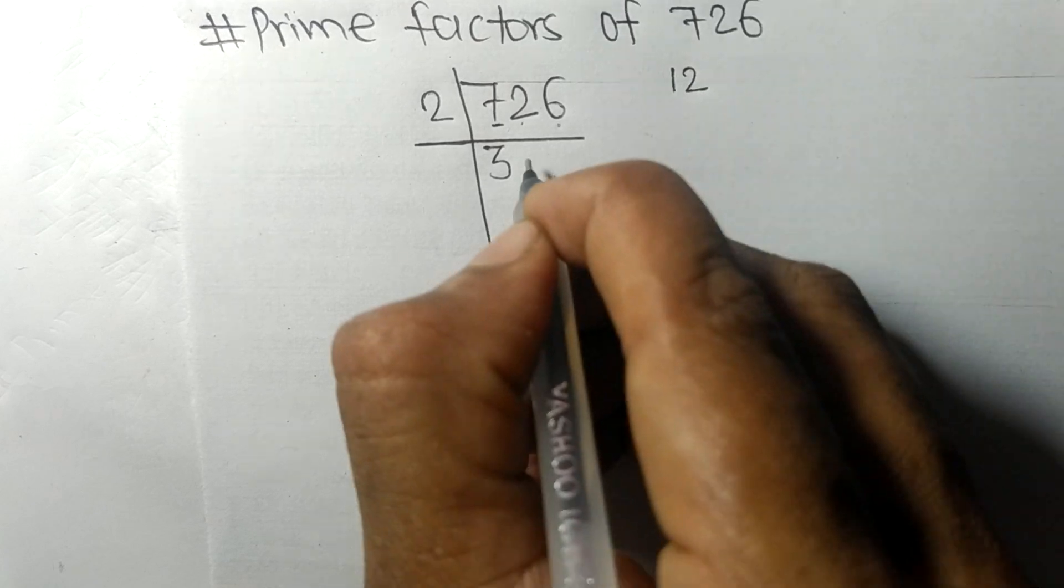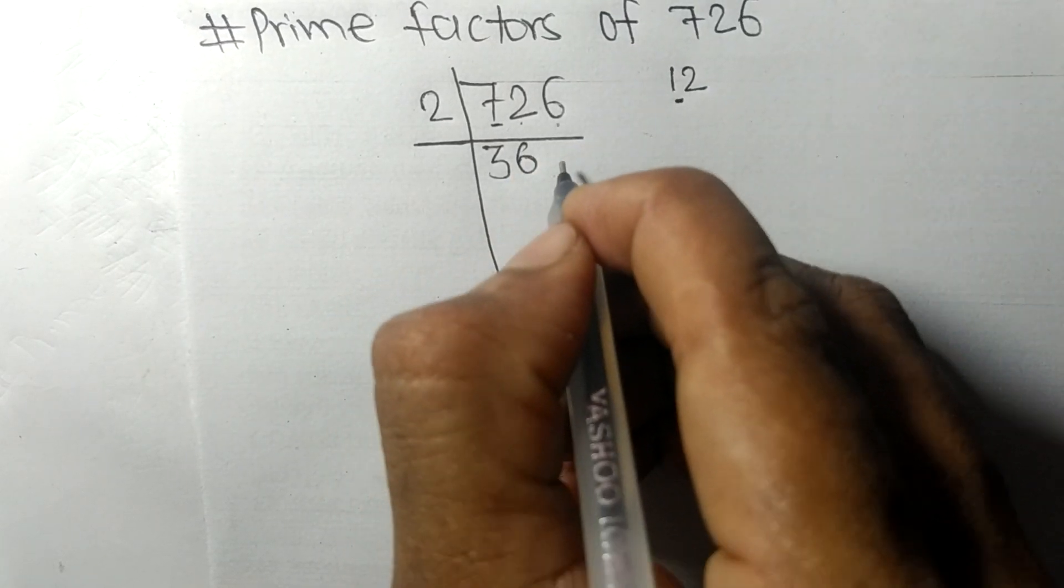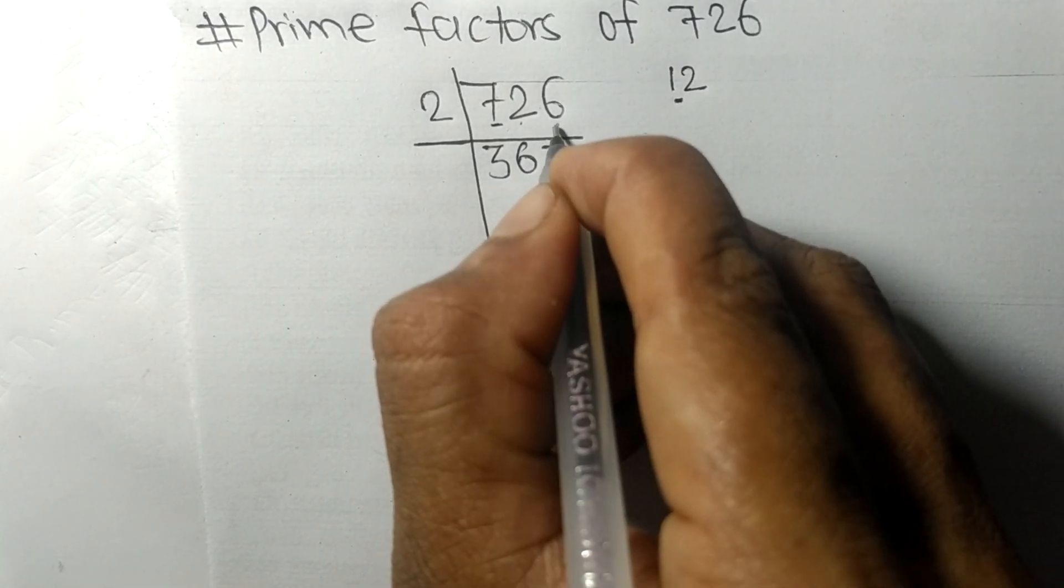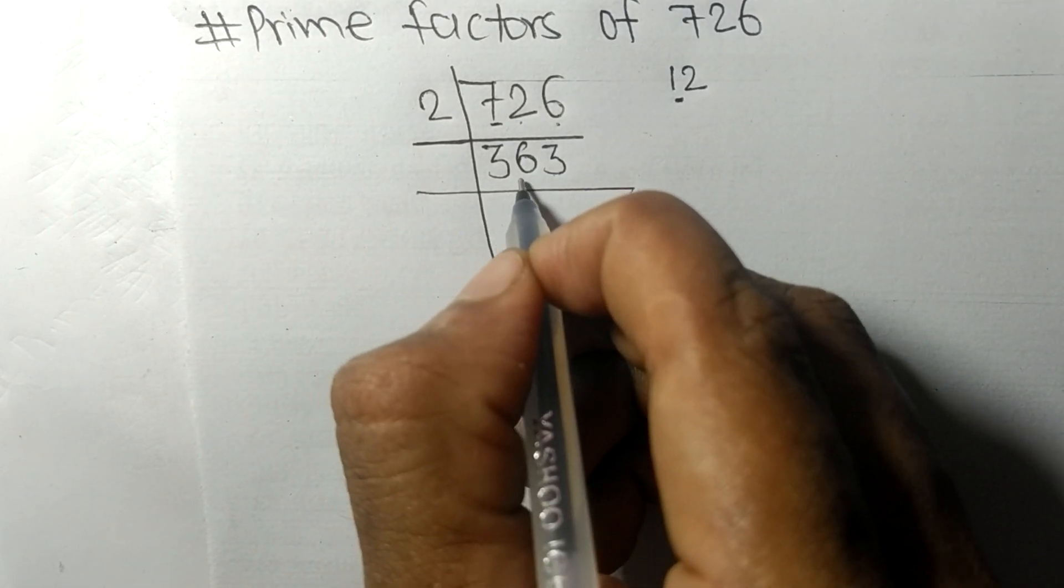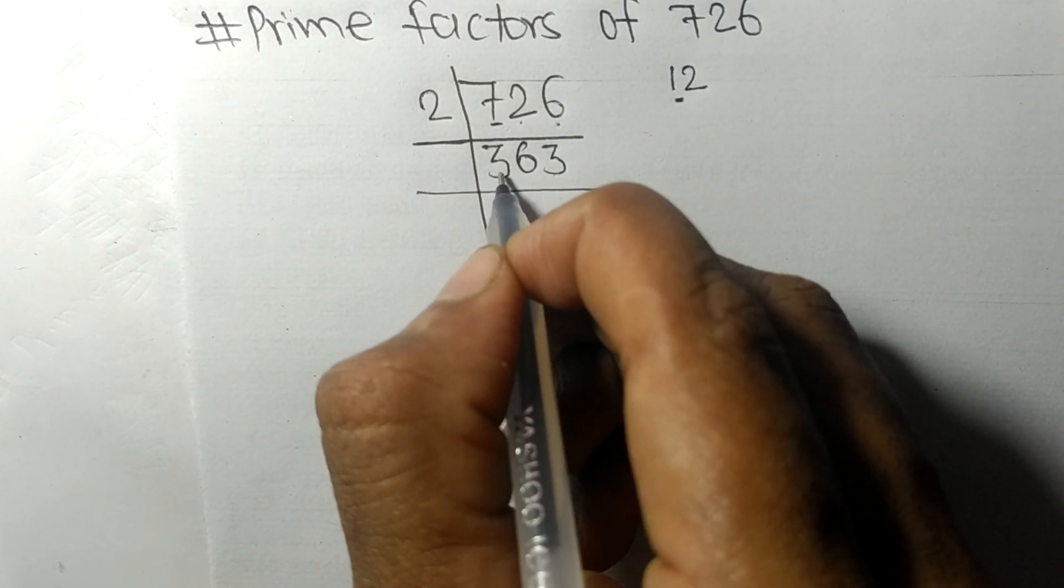2 times 6 equals 12, and 2 times 3 equals 6. So now we got 363, which is exactly divisible by 3.